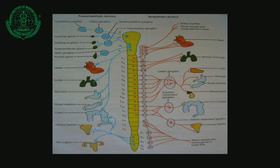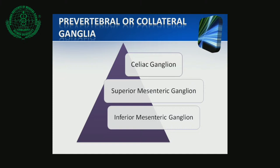The pre-vertebral or collateral ganglia are situated in the thorax, abdomen, and pelvis in relation to the aorta and its branches. These include the celiac ganglia and superior mesenteric ganglia. They receive pre-ganglionic fibers from T5 to L2 segments. The post-ganglionic fibers supply the visceral organs of the thorax, abdomen, and pelvis. Since the adrenal medulla and celiac division develop from the same neural crest, their secretions and functions are almost the same.